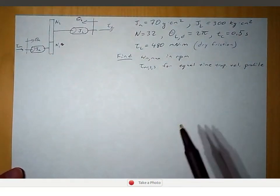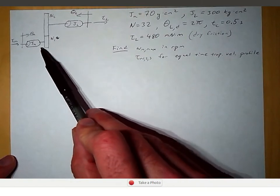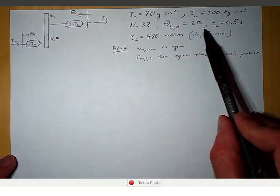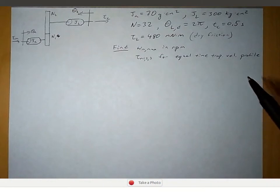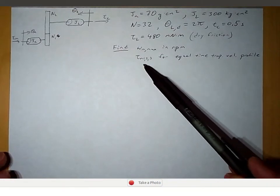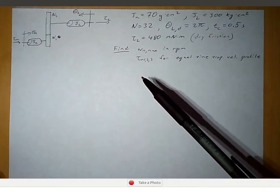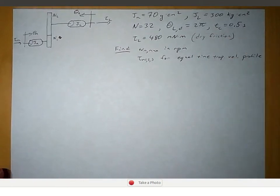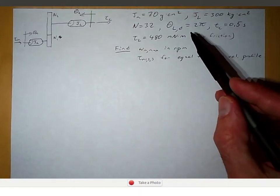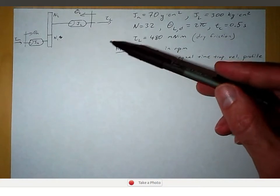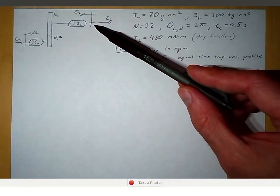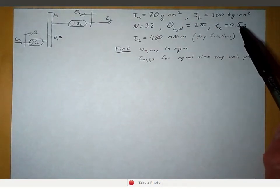To start off, we're going to find the maximum motor speed for this incremental motion in RPM, because that's the units typically given for electric motors. And we want to find the maximum or peak torque required for this incremental motion. Our motion is given for the load — we want the load to rotate one revolution, so two pi radians, in half a second.